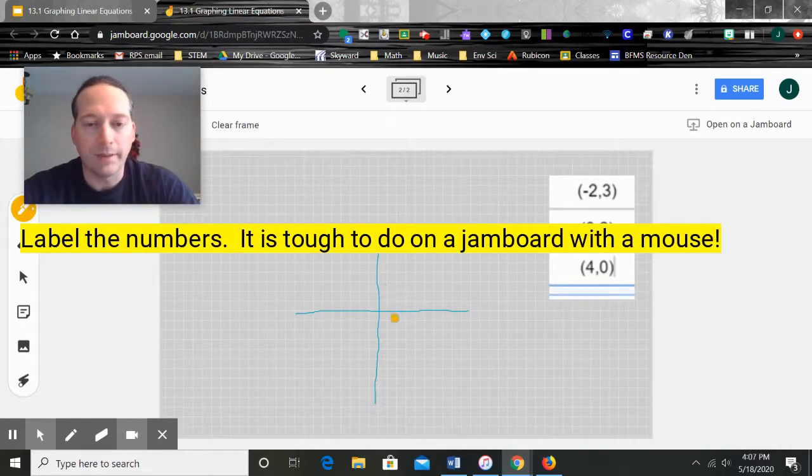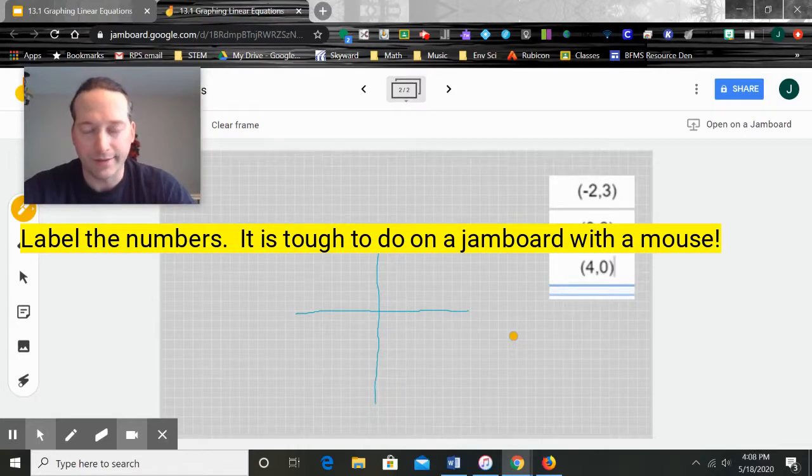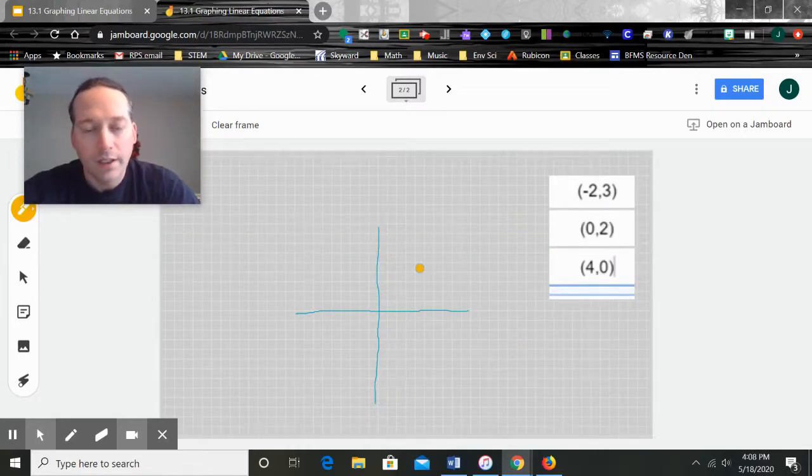So I'm not going to label them with the numbers here, you would do that only because I'm doing it on here, that's just too hard to do. Negative two, three. So here's negative two, up three. One, two, one, two, three. Here's my first point. Next one is zero, two. So zero, two.